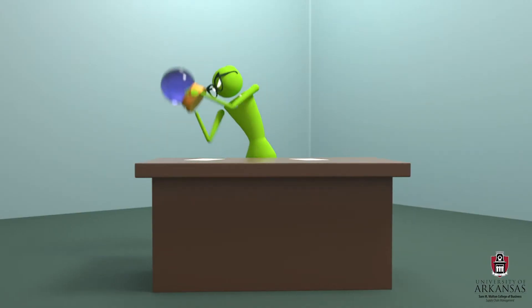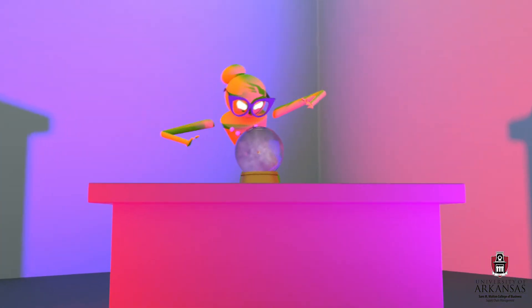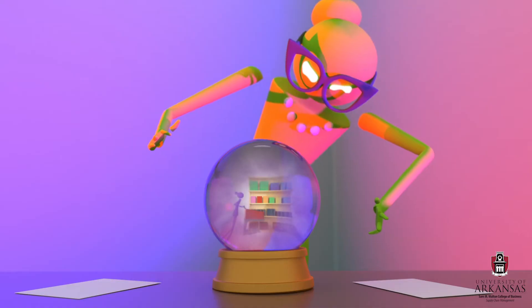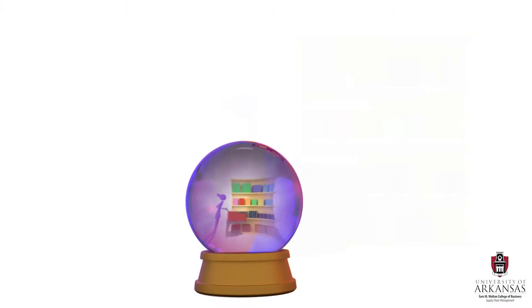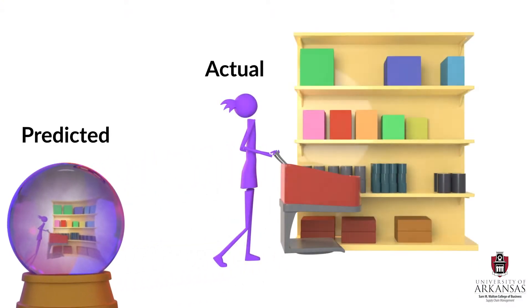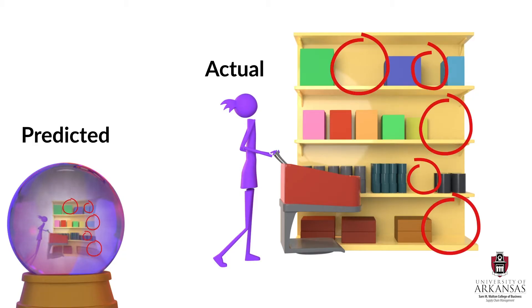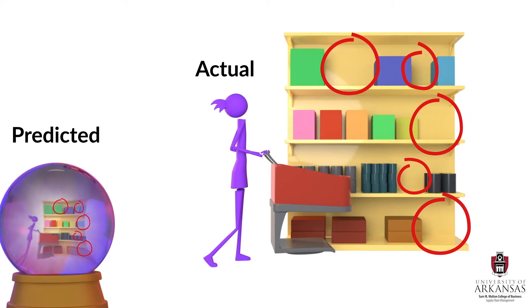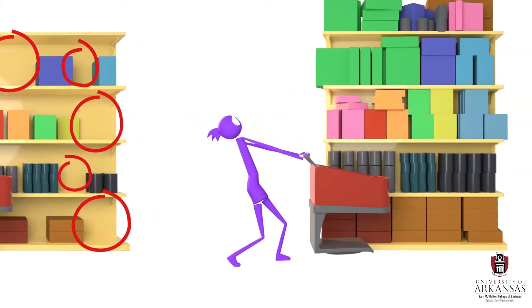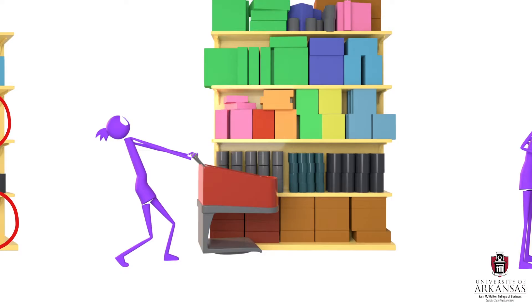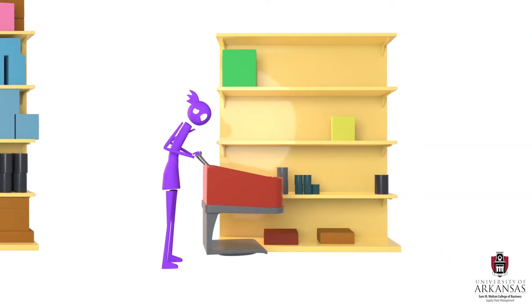We consider a forecast to be good if it is very close to actual demand. In other words, we want the deviation between predicted and actual demand to be low in magnitude. In addition, we would like our forecasts to be unbiased. That means we want to make sure that we do not systematically overpredict or underpredict demand.